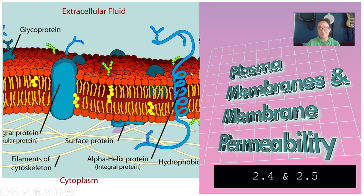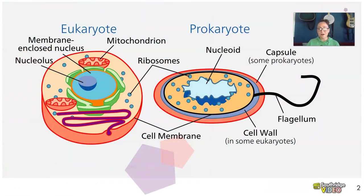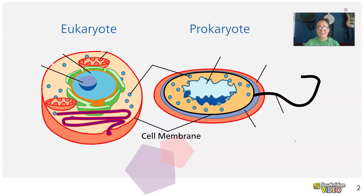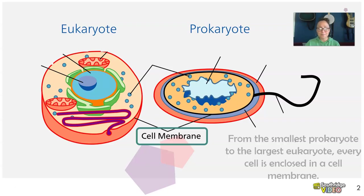So when we talk about our cell membranes, cell membranes are one of those features that are common in every single type of cell, no matter if it is a eukaryote or a prokaryote. Whether it's a fungus, plant cell, animal cell, protist, bacteria, or Archaean, they all are going to have a cell membrane. Let's go ahead and talk about the cell membrane in a bit more detail.